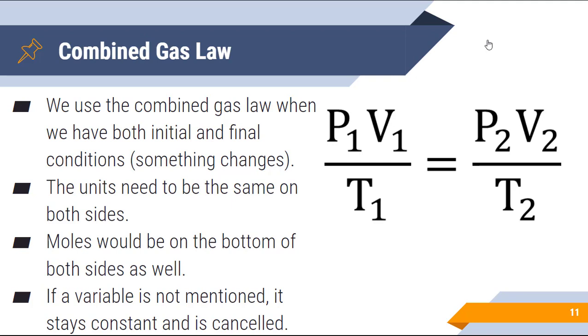We use the combined gas law when we have both initial and final conditions, meaning that something changes as a result. Do keep in mind that units need to be the same on both sides of the equation. If we were to look at moles—and this is important as well—moles would actually appear on the bottom of both sides as well, so we would have P1 times V1 over n1 times T1 equals P2 V2 over n2 T2. If the variable is not mentioned in the equation, so for example you're given a problem and the variable is not mentioned, then we assume that it stays constant and it is canceled.